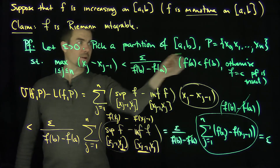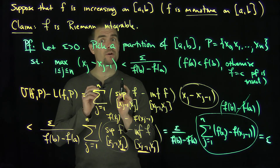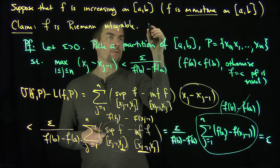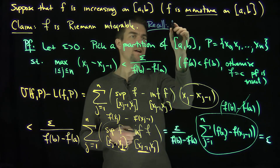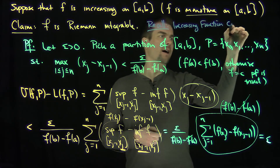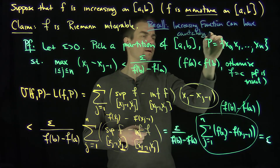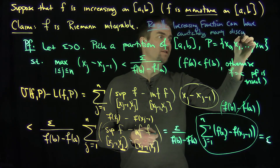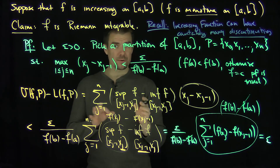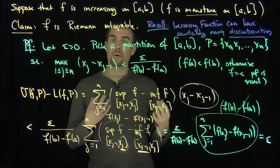So for any epsilon, we constructed a partition such that U(f,P) minus L(f,P) is less than epsilon, which shows that any increasing function is automatically Riemann integrable. As a neat consequence, recall that increasing functions can have countably many discontinuities, which means there are Riemann integrable functions that have a countable number of discontinuities.